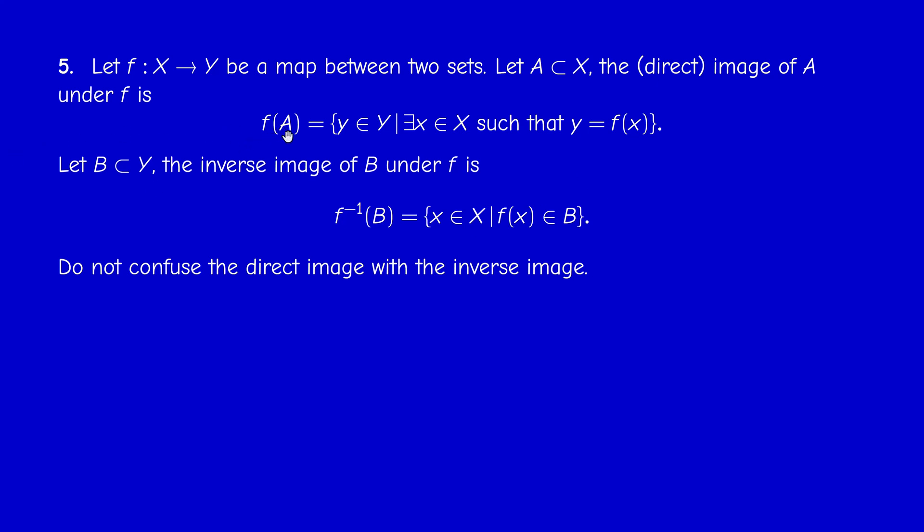The direct image lives in the target space, whereas the inverse image lives in the source space, and these two can be distinct.